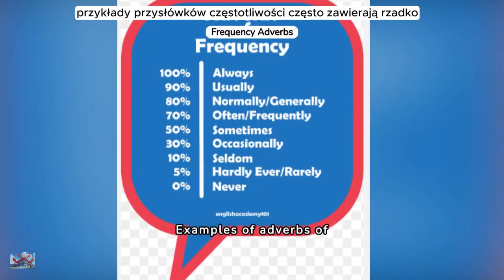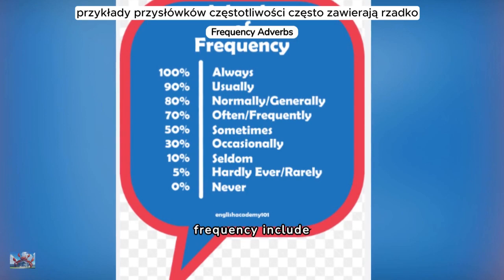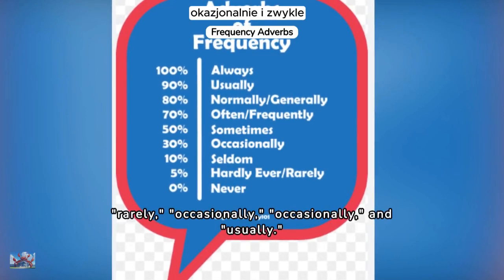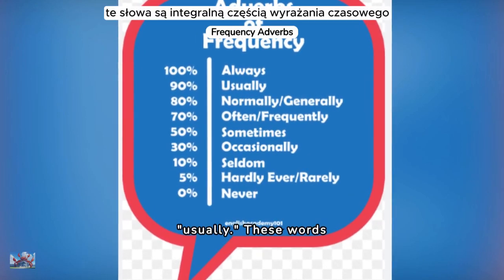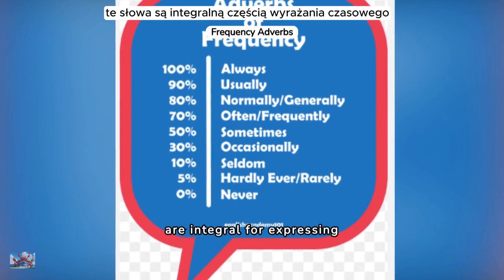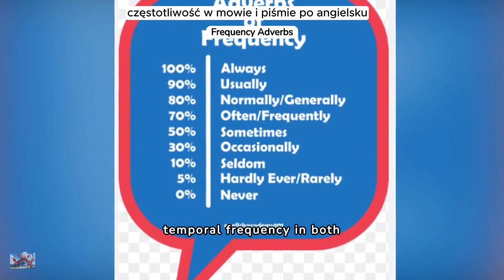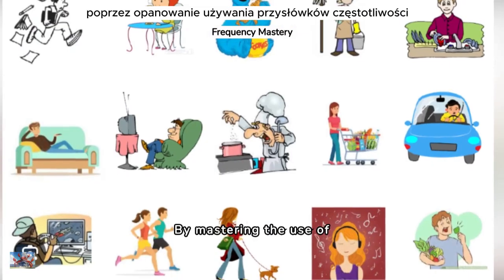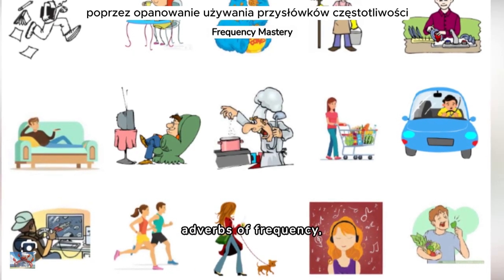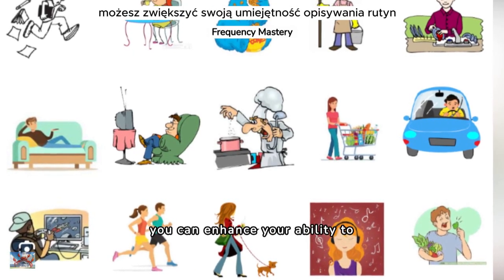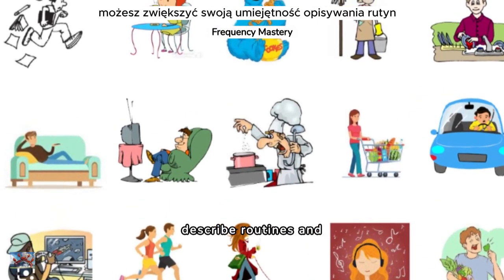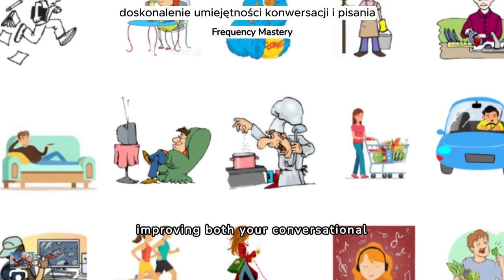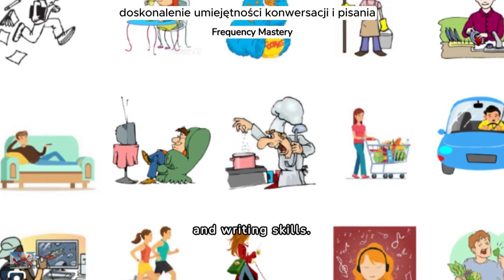Examples of adverbs of frequency include often, rarely, occasionally, and usually. These words are integral for expressing temporal frequency in both spoken and written English. By mastering the use of adverbs of frequency, you can enhance your ability to describe routines and habits clearly, improving both your conversational and writing skills.